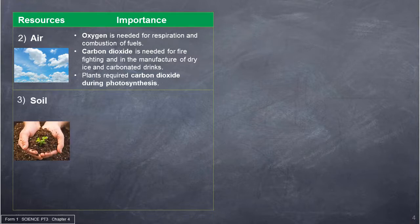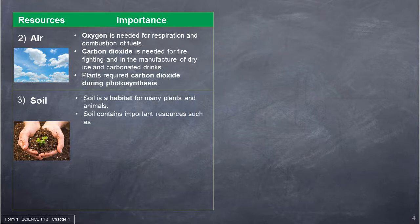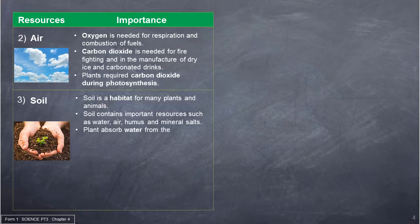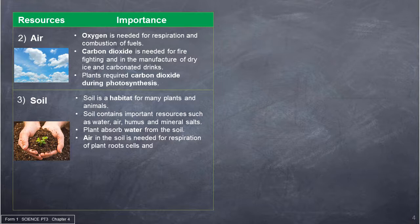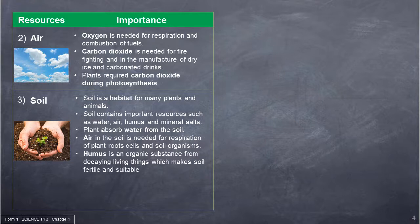The importance of soil: soil is a habitat for many plants and animals. Soil contains important resources such as water, air, humus and mineral salts. Plants absorb water from the soil. Air in the soil is needed for respiration of plant root cells and soil organisms. Humus is an organic substance from decaying living things which makes soil fertile and suitable for farming.